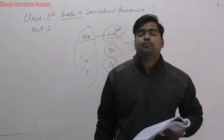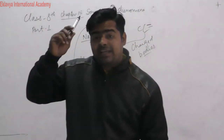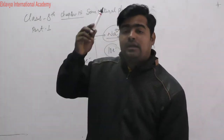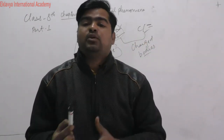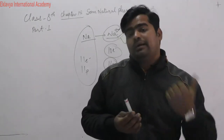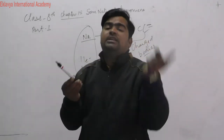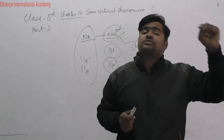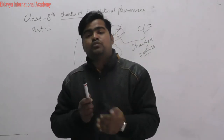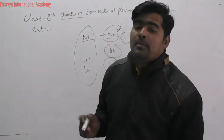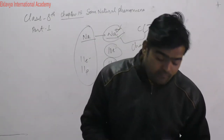A simple everyday example: in lower classes we used to rub a plastic scale on dry hair and then bring it close to small pieces of paper — the paper gets attracted to the scale. This means electrons from the dry hair transferred to the scale, so the hair gets positively charged and the scale gets negatively charged. This process is called charging by friction.